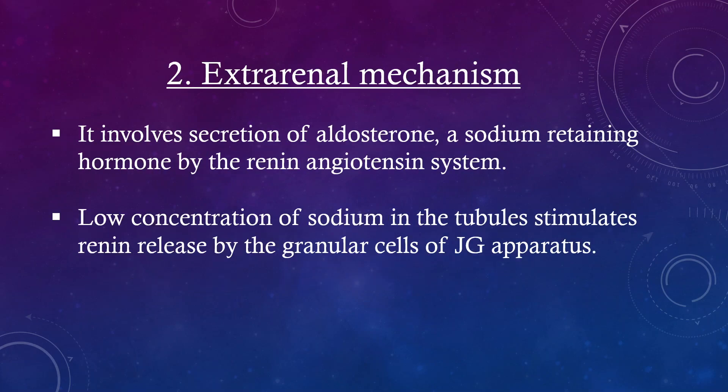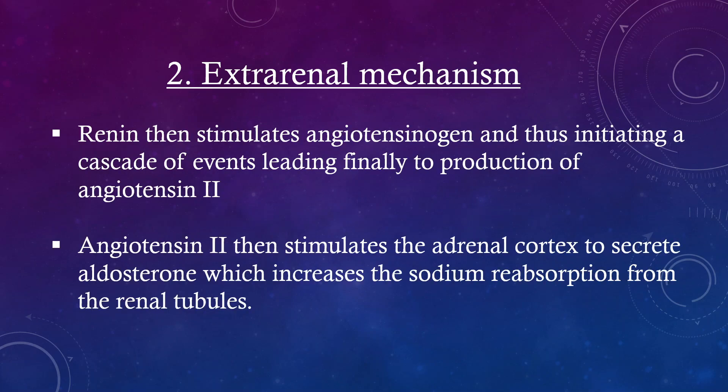Extra-renal mechanism. It involves secretion of aldosterone — a sodium-retaining hormone — by the renin-angiotensin system. Low concentration of sodium in the tubules stimulates renin release by the granular cells of the juxtaglomerular apparatus. Renin then stimulates angiotensinogen, initiating a cascade of events leading to production of angiotensin II. Angiotensin II then stimulates the adrenal cortex to secrete aldosterone, which increases sodium reabsorption from the renal tubules.